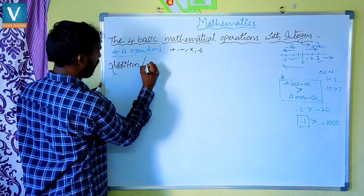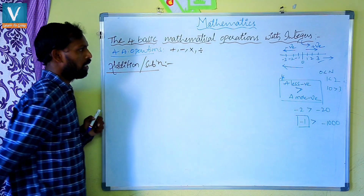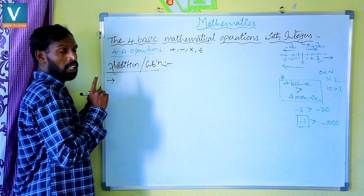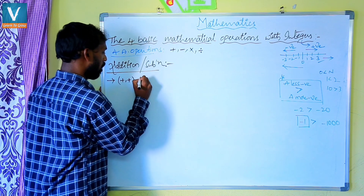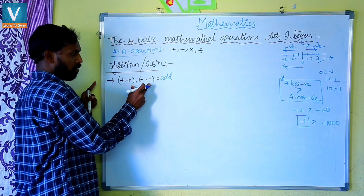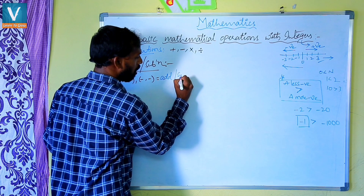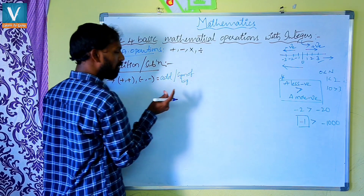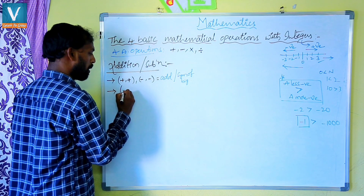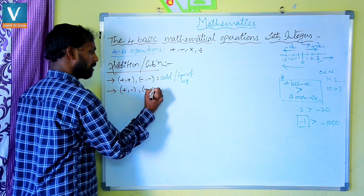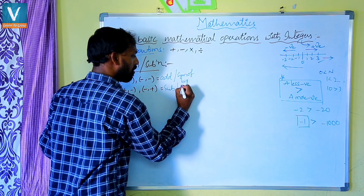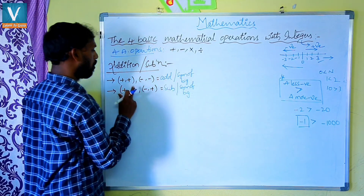For addition and subtraction, we have to remember two cases compulsory. Case one: when given two like signs — meaning same symbols, either two positive or two negative — first we have to add the integers, and then we give the symbol of the bigger number. Case two: when given alternate symbols — one plus and one minus — first we have to subtract, and then again we give the symbol of the bigger number.